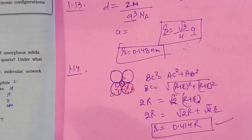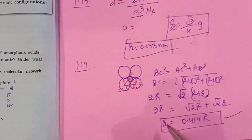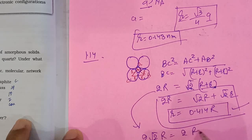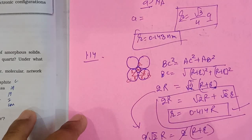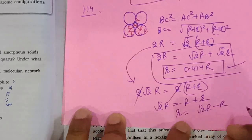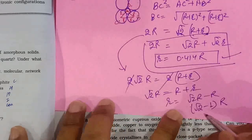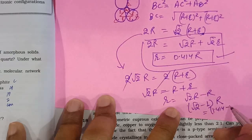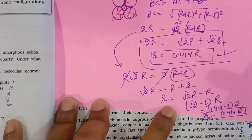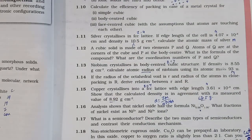The derivation gives small r = 0.414 × capital R. Multiplying both sides by √2 and simplifying: √2×R = R + r, so r = (√2 − 1)×R, and since √2 = 1.414, r = 0.414R. This is the relationship between the octahedral void radius and the atom radius.